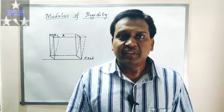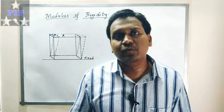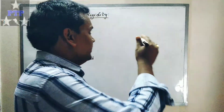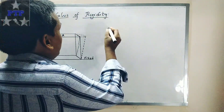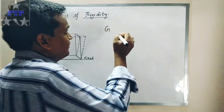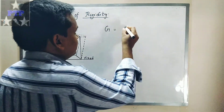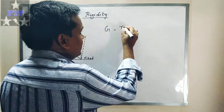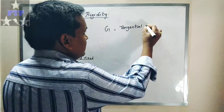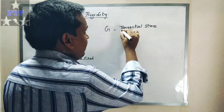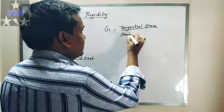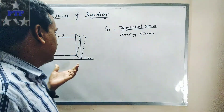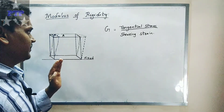So that parallel force also applies a stress on the cake, and that stress is called shear stress. Now, coming to the modulus of rigidity — also called shearing modulus — it is given by the letter G. G is equal to tangential stress upon shearing strain, where the force acts on the block tangentially.